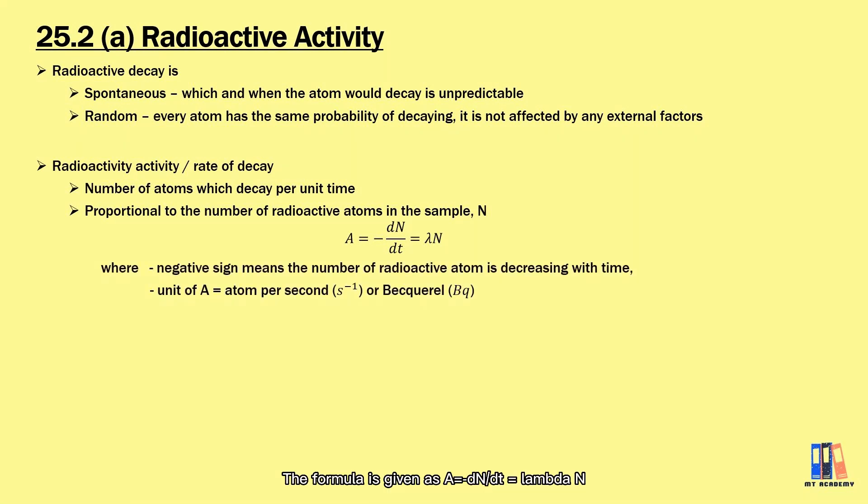The formula is given as A = -dN/dt = λN, where the unit of A is the number of atoms decay per second, or in Becquerel. The negative sign shows that the number of radioactive atoms is decreasing.